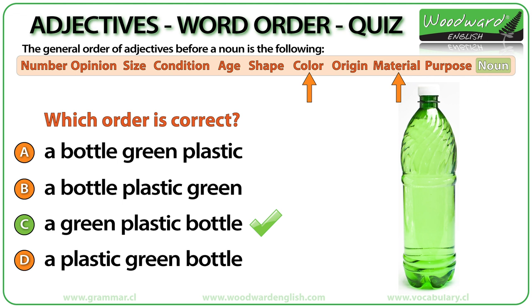A green plastic bottle. Green is a color, plastic is the material the bottle is made of. Color comes before material.